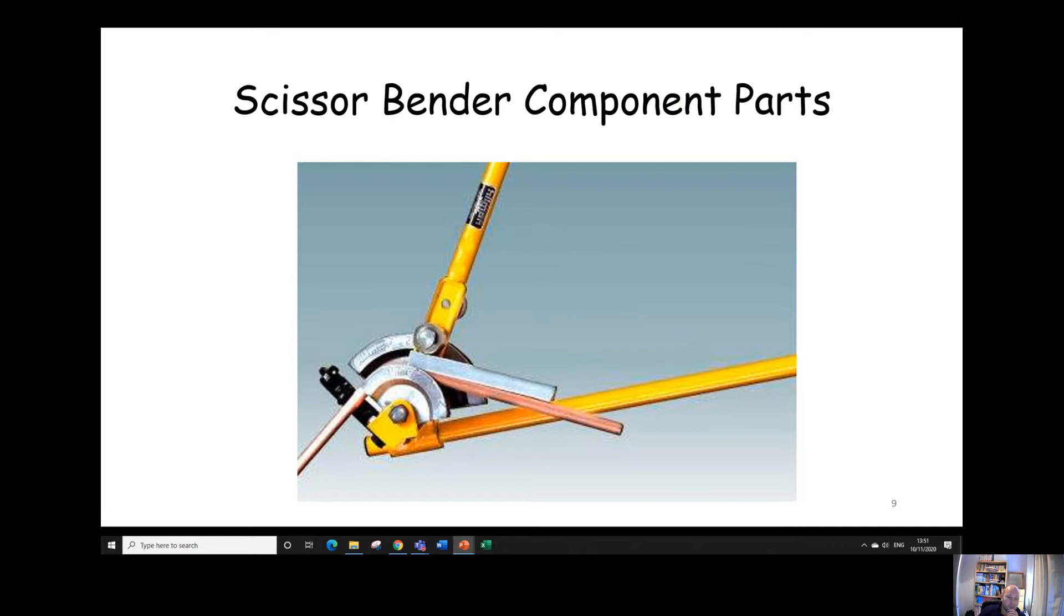So the component parts, guilds might ask you about these. Here we've got the pipe stop, the first one that we can see here. That holds the pipe when you're bending it. Then these round bits here are the formers. This is a 15 mil former at the front here, 22 mil former at the back there. The roller, the bit that rolls round as you bend it. And the guide or back guide which you put in alongside the pipe to hold it tight against the pipe whilst you make the bend.